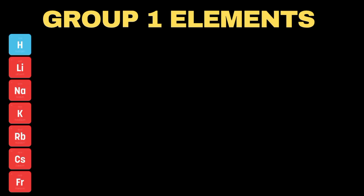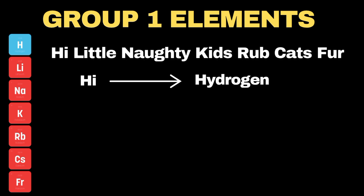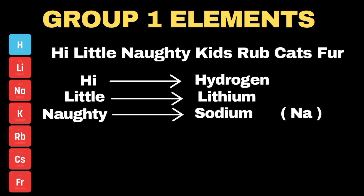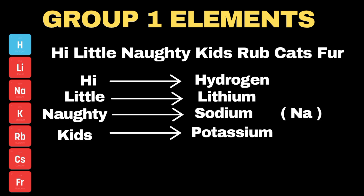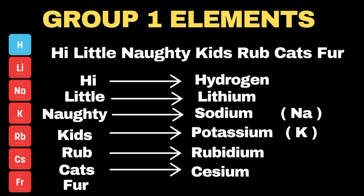To remember group 1 elements, my personal trick is: 'Hi, little naughty kids rub cats fur.' Here, 'hi' represents hydrogen, 'little' refers to lithium, 'naughty' represents sodium (symbol Na), 'kid' stands for potassium (symbol K), 'rub' represents rubidium, 'cat' stands for cesium, and finally 'fur' is used to represent francium.